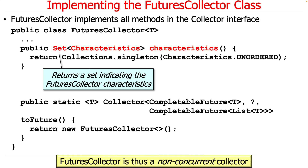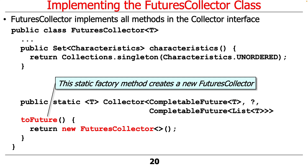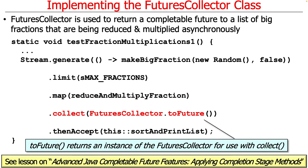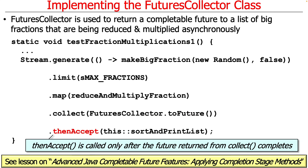The toFuture factory method makes a new FuturesCollector, and that's what we use when we call collect — FuturesCollector.toFuture() — which gives us back that single CompletableFuture. Then, after everything is converted into a CompletableFuture to a list of type T, we have another completion stage method, thenAccept, called back after everything else is done. That's what goes ahead and sorts and prints the list — doing sorting in parallel with heap sort and quick sort simultaneously, picking whichever finishes first.